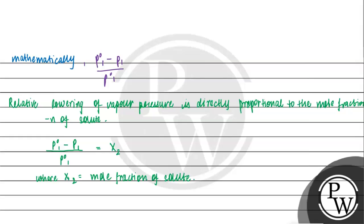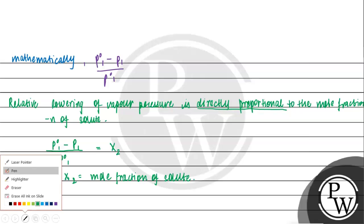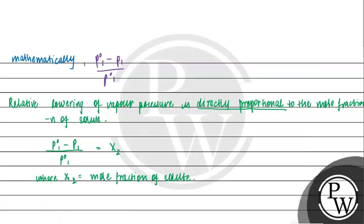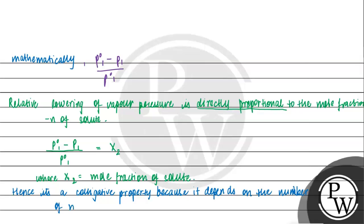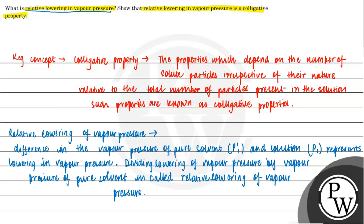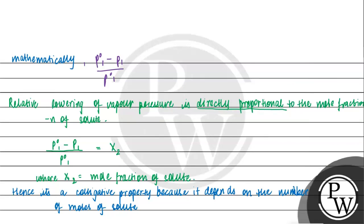If we look at this, Relative Lowering of Vapor Pressure is directly proportional to the mole fraction. We know that colligative properties only depend on the number of moles of the solute. Hence, it is a colligative property because it depends on the number of solute particles. We have proved this for Relative Lowering of Vapor Pressure.